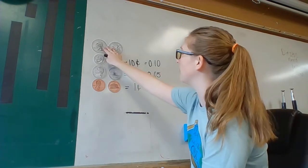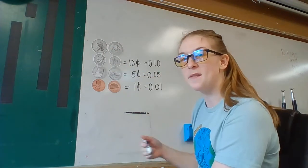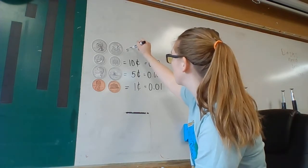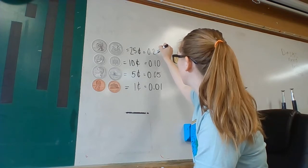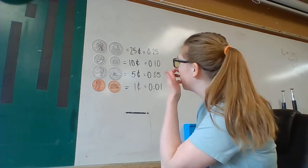And remember, up at the top, that's our biggest coin we talked about, and that's a quarter. And a quarter is worth 25 cents, so when we write that it's gonna be looking like this when we include it with the dollar sign.